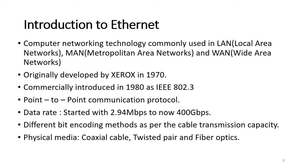Ethernet technology was originally developed in 1970 by a company called Xerox. There were many versions initially, and later groups formed under IEEE officially released it as IEEE 802.3 spec in 1980. From that point it was commercially used in computers. One basic feature is that Ethernet is a point-to-point communication protocol — two nodes can communicate with each other, and all nodes cannot put data on at the same time.